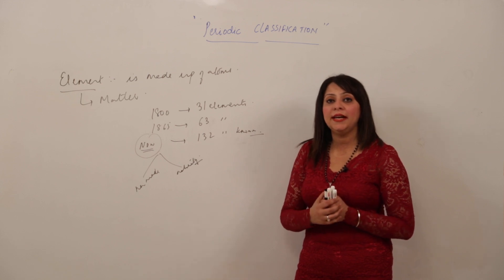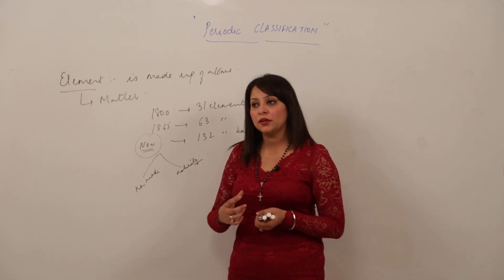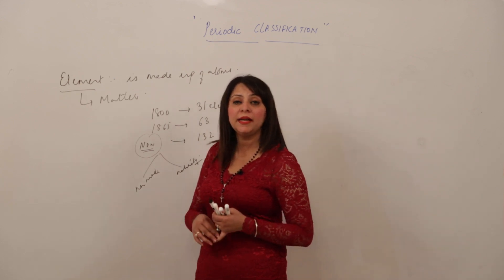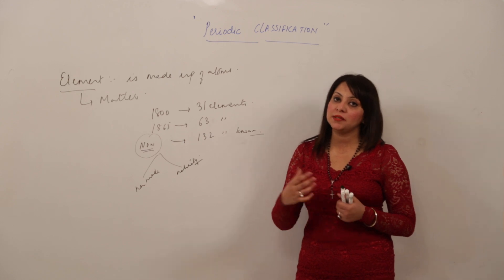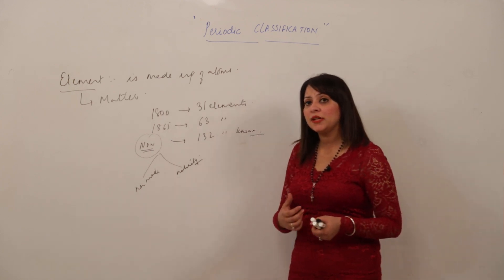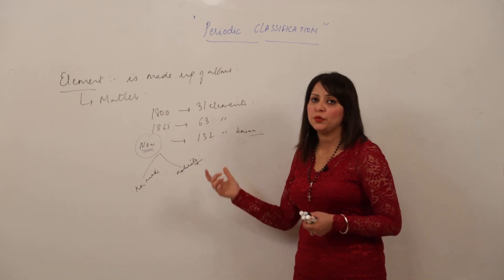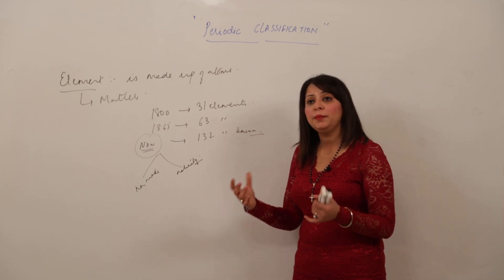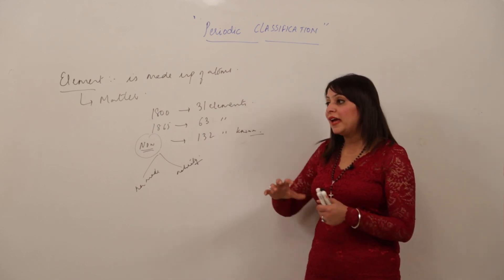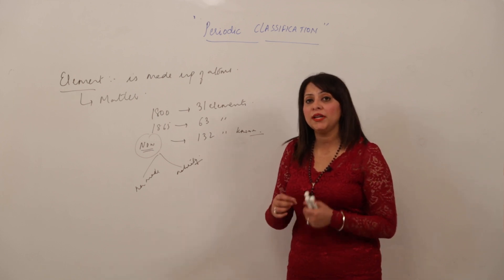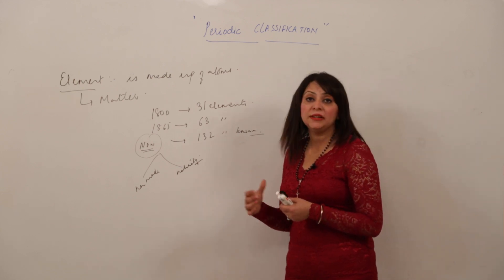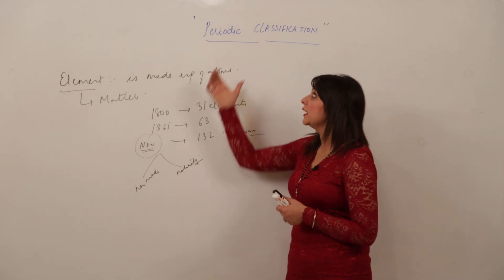We have approximately 132 elements known till date, and many more are being prepared in labs. So there are so many elements found on Earth, whether synthetic or natural. If we wish to study all 132 elements individually, it will be very difficult — there are so many properties: how they look, how they behave, how they react with hydrogen, oxygen, or other materials, and their physical and chemical properties.